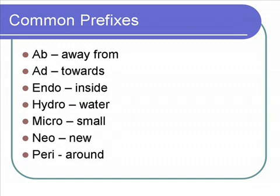'Hydro' — for example, to hydrate. If you want to hydrate yourself, you drink a bunch of water. 'Micro,' such as a microscope, something used to visualize very small things. 'Neo' means new, such as neonatal — that's where all the newborn babies are in a hospital. The last prefix on this slide is 'peri,' meaning around. The first thing I think of is perimeter, which is the distance around something, like the perimeter of a square being the sum of the lengths of all its sides.